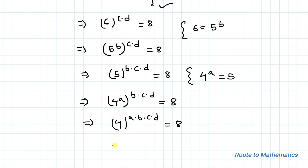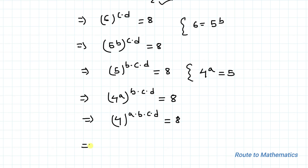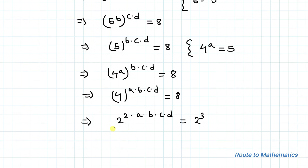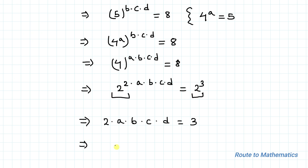We have an exponential equation. To equate the powers we need to make equal bases on both sides. We write 2 to the power 2 times a times b times c times d equals 2 to the power 3. Both sides have the same base, so we equate powers: 2 times a times b times c times d equals 3. Therefore a times b times c times d equals 3 over 2. This is our answer using the exponential rule.